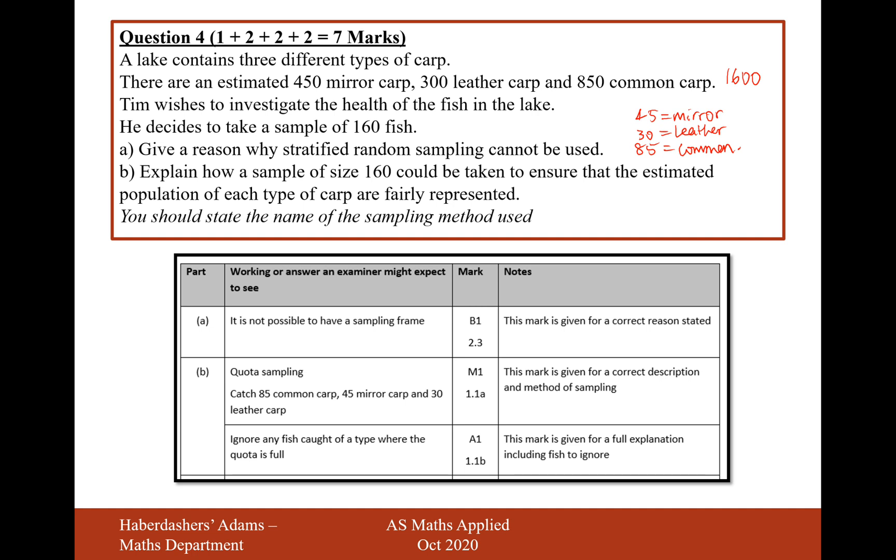So we'd want to catch these amounts of each different type of fish. We'd go fishing and then if we caught one that we wanted, we'll measure it and weigh it and throw it back in or keep it out on a separate area for the fish to still swim around in. And then if we catch, say we've already caught all 45 mirror fish and we're looking for some more leather in common, but we catch another mirror, we just toss that one back in and not count it.